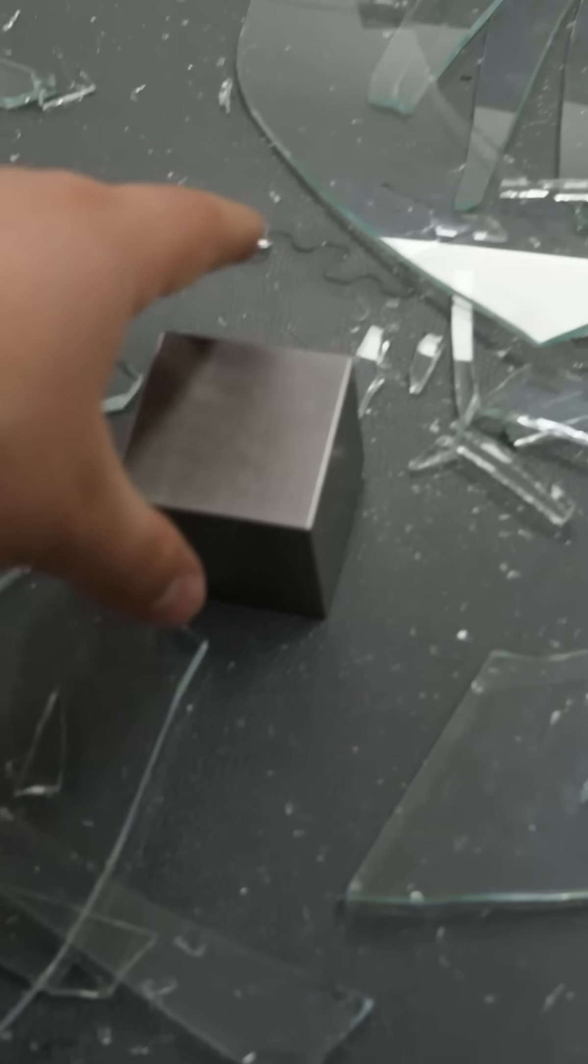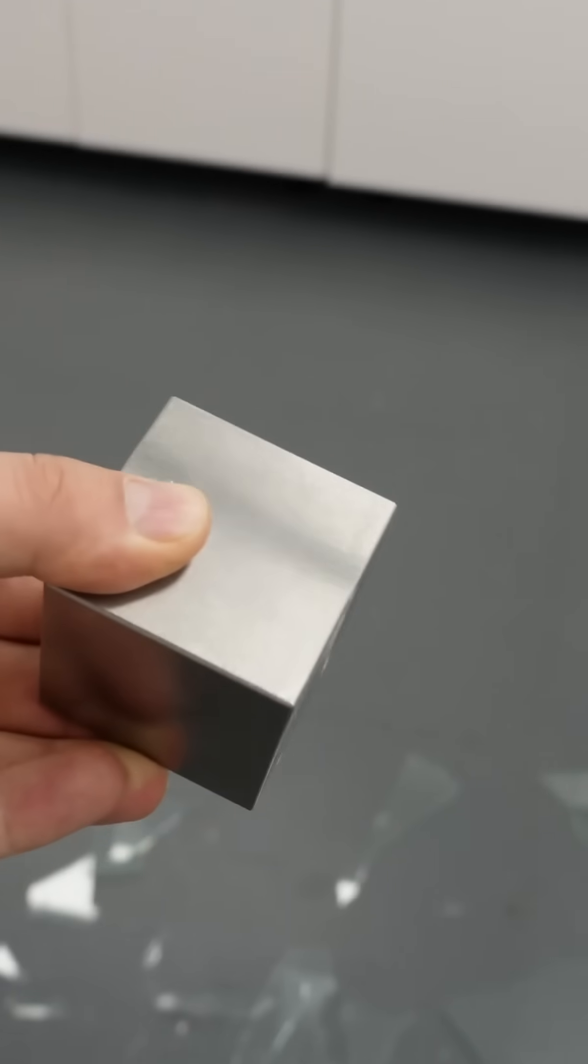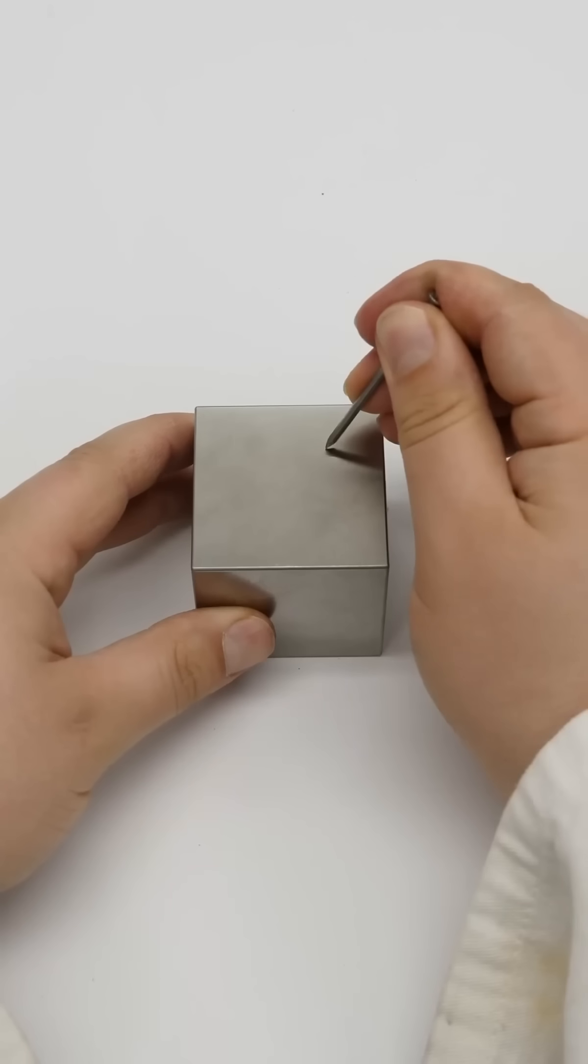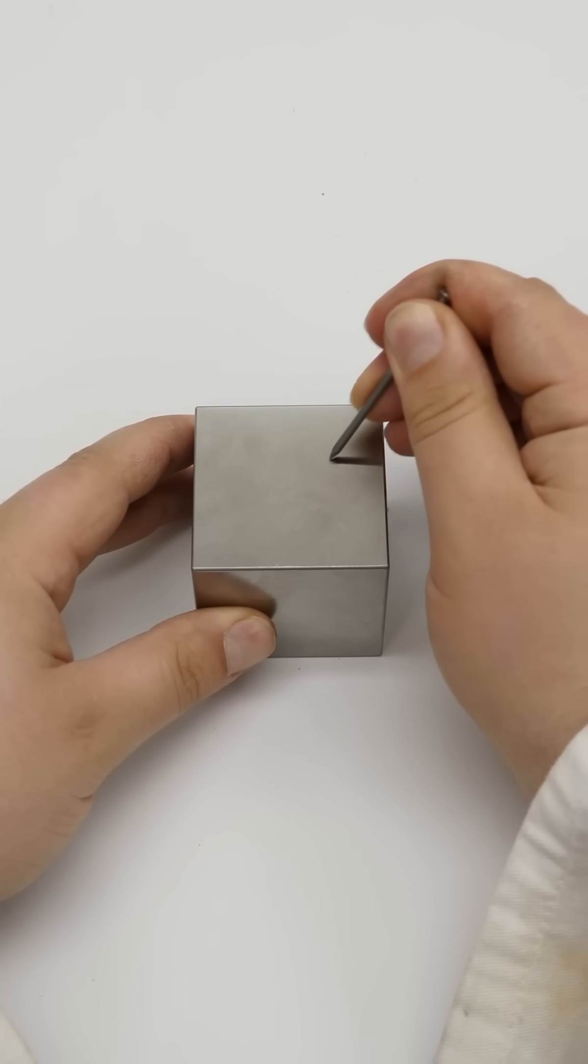That's way too much for the glass handle. On top of that, the tungsten cube didn't get a single scratch. That's because tungsten is also one of the hardest metals. Only a few materials are capable of scratching it.